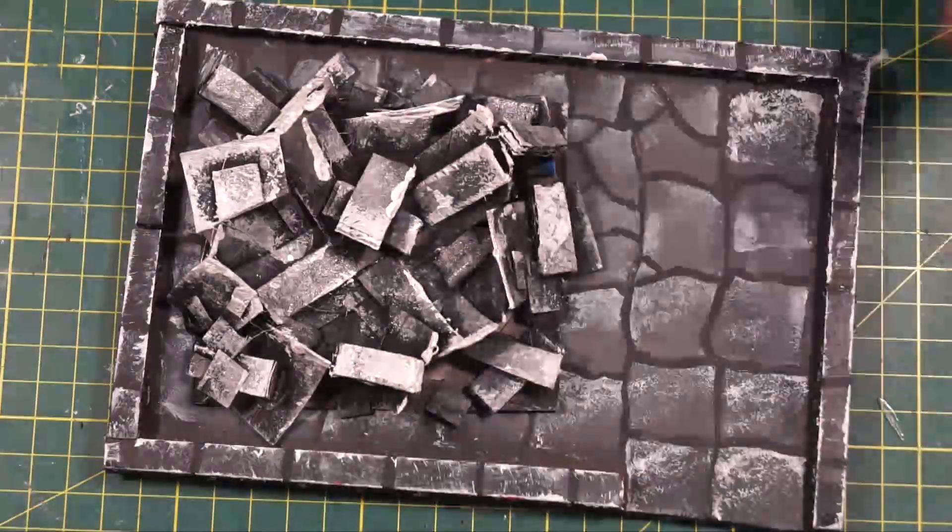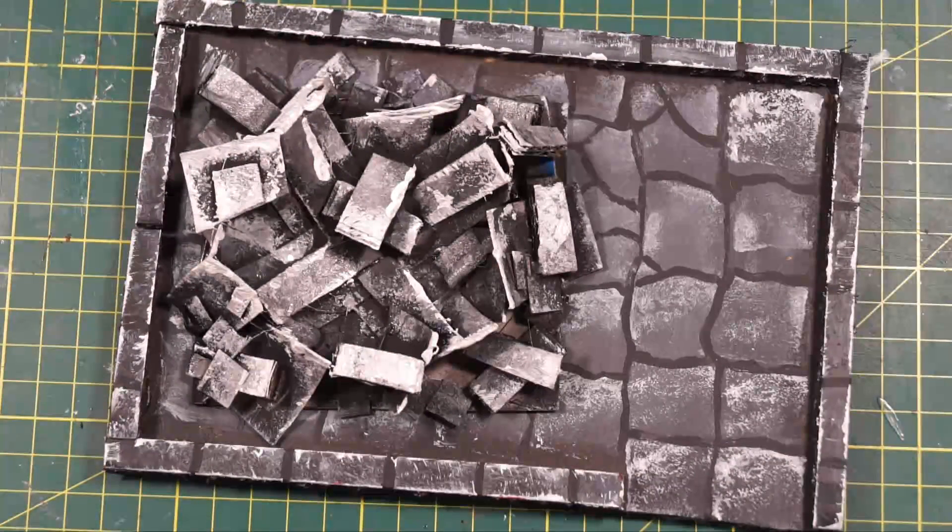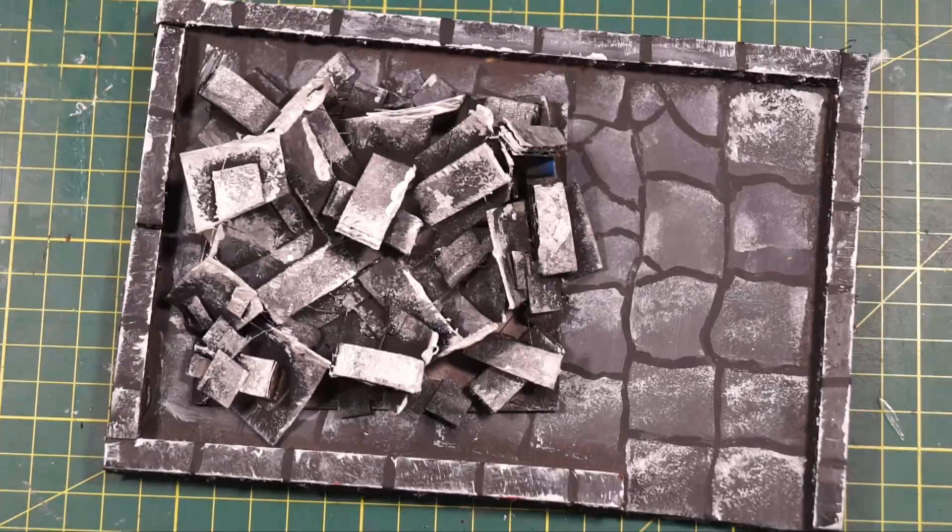And that's what it looks like on a tile, a collapsed ceiling. So plenty of stuff to rummage around in. So that's how you can make a collapsed roof. A lot of little bits and pieces, but very easy.